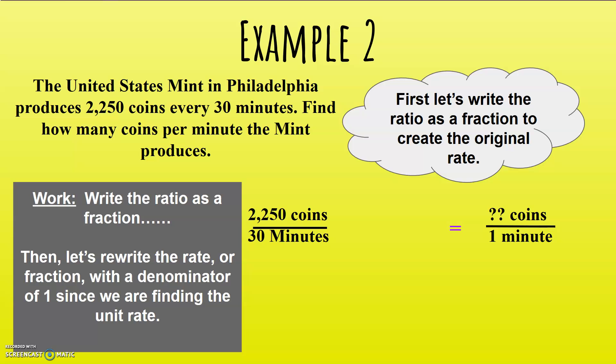We need to find our unit rate, which means we need to have a denominator of 1. The unit stays the same. Minutes stays on the bottom. Coins stays on the top.